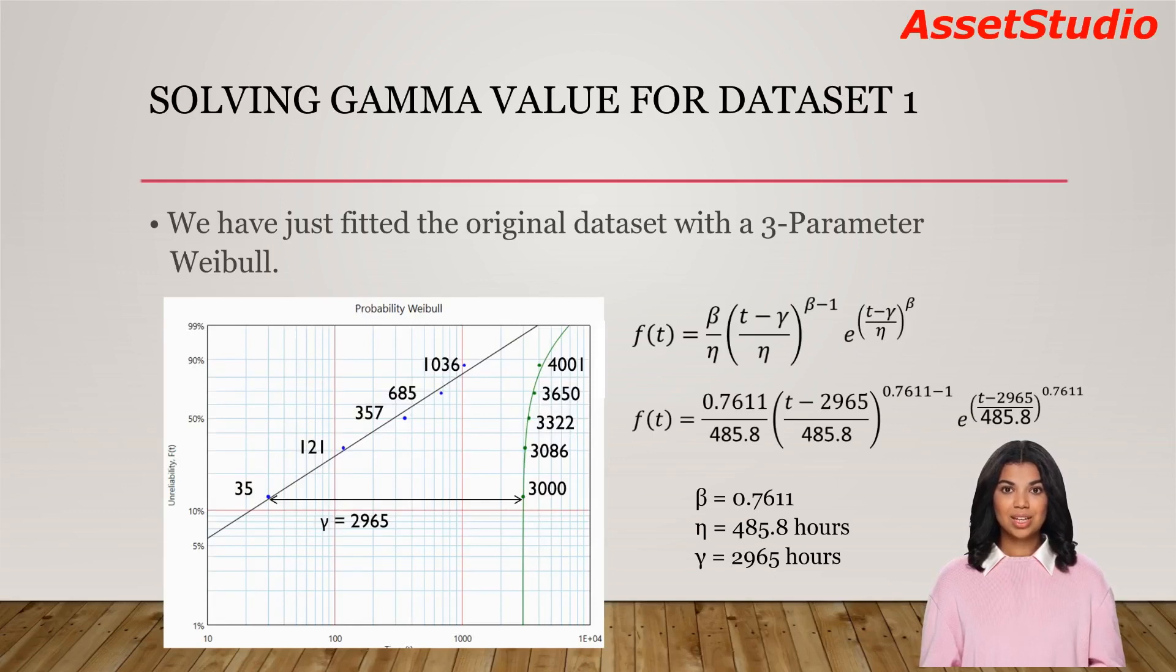The software search for a gamma value such that the adjusted dataset does not form a curvature. Based on the new straight line, the beta and eta are now 0.7611 and 485.8 hours, respectively. Now we can plot the 3-parameter Weibull curve by adding gamma value to the straight line as shown. We have just fitted the original dataset with a 3-parameter Weibull.